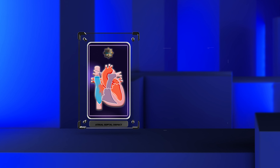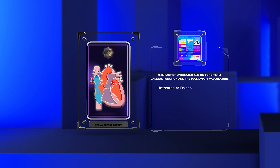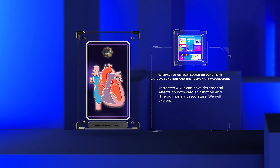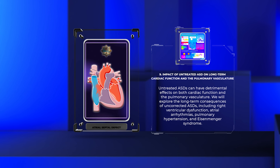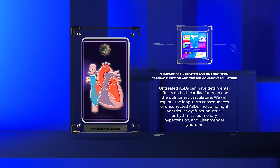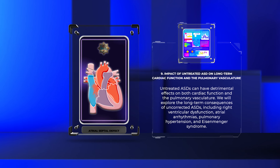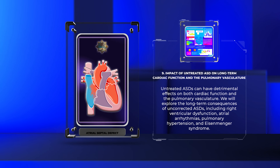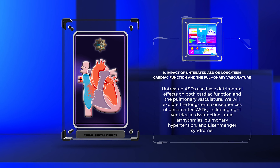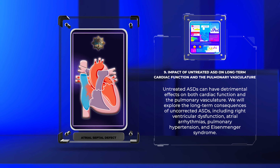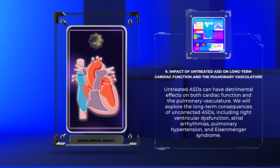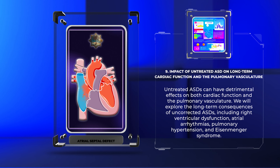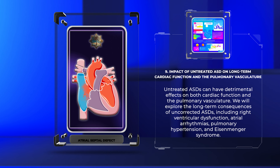Untreated ASDs can have detrimental effects on both cardiac function and the pulmonary vasculature. We will explore the long-term consequences of uncorrected ASDs, including right ventricular dysfunction, atrial arrhythmias, pulmonary hypertension, and Eisenmenger syndrome.